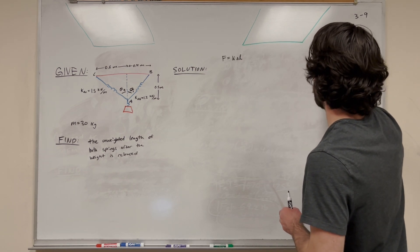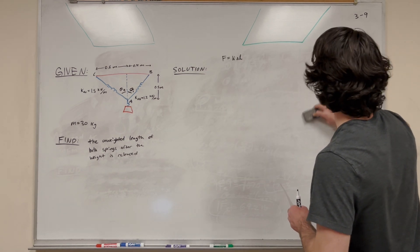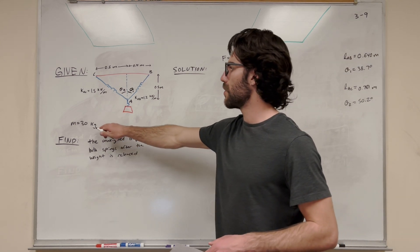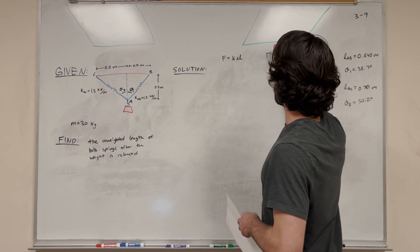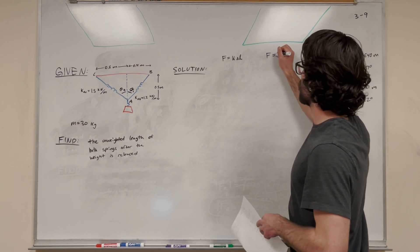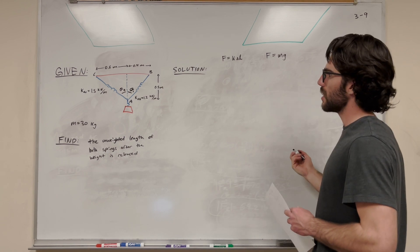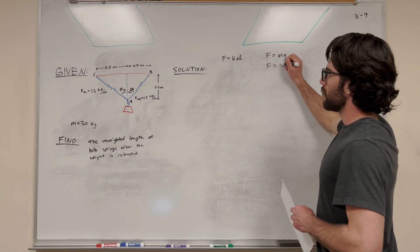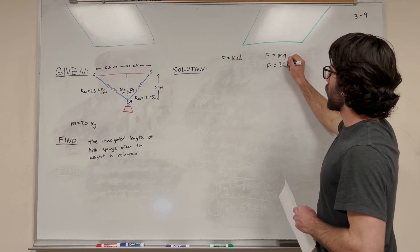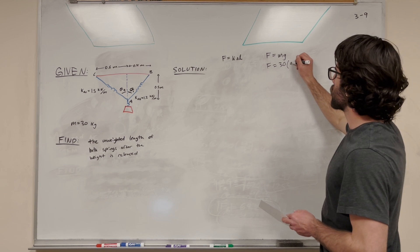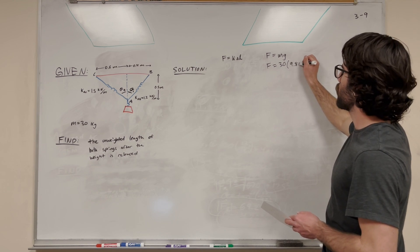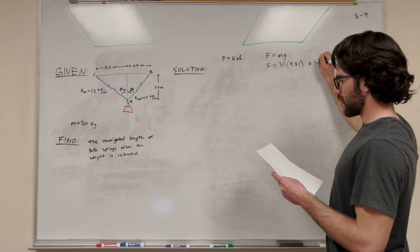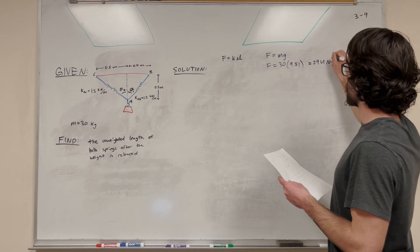We also need to find the weight. We're given mass, not weight, so we need to convert from kilograms to newtons. Force equals mass times the gravitational constant: 30 kilograms times 9.81, giving us a force equal to 294 newtons.